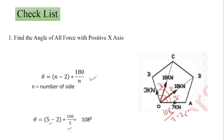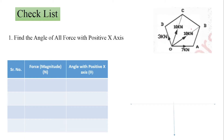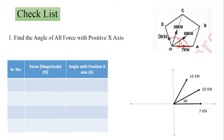Now we find the angle of all forces with the positive x-axis. The first force, 7 kilonewton, is horizontal, so its angle is 0 degrees. The next force, 10 kilonewton — from the reference to that force the angle is 36 degrees. We use our technique to find the angle of all forces with respect to the positive x-axis.